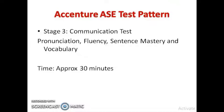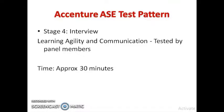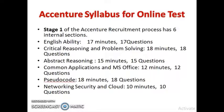Stage three is the Communication Test, which assesses your pronunciation, fluency, sentence mastery, and vocabulary. They will check how you speak, how fluent you are, and your speaking, reading, and listening skills. You will have approximately 30 minutes for this. Stage four is the Interview, where panel members — one, two, or three — will judge you on learning agility and communication. The interview typically goes about 20 to 30 minutes.